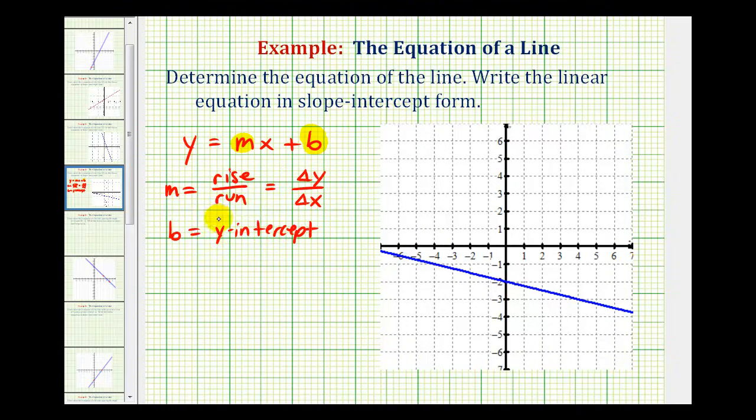We should be able to analyze the graph to determine both the slope and the y-intercept. So looking at our line, if we can select two points with integer coordinates, we should be able to determine the ratio of the change in y to the change in x.